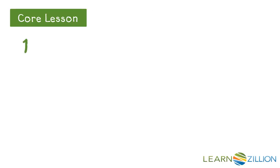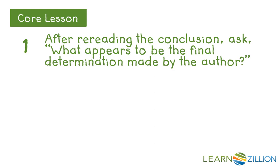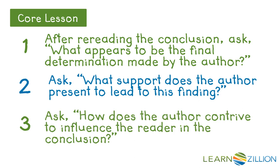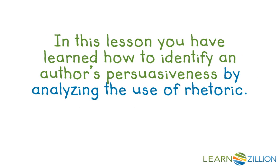Let's review the steps we used in this lesson. First, after rereading the conclusion, we asked: what appears to be the final determination made by the author? Next, we asked: what support does the author present to lead to this finding? And finally, we asked: how does the author contrive to influence the reader in the conclusion? In this lesson, you have learned how to identify an author's persuasiveness by analyzing the use of rhetoric.